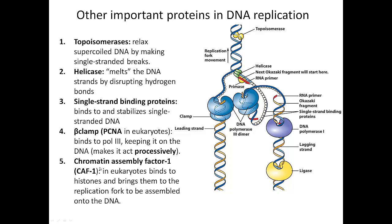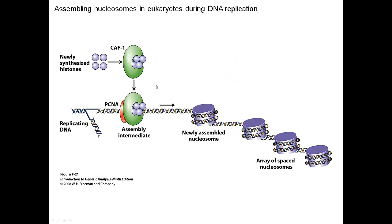Finally, chromatin assembly factor, or CAF-1, is very important during replication but only in eukaryotes. It is involved in putting the nucleosomes onto the new DNA. Only eukaryotes have nucleosomes — prokaryotes do not. The nucleosomes come off the part of DNA being unraveled, and so these old nucleosomes plus some new ones are assembled by CAF-1, which is made up of individual histone proteins. CAF-1 then loads them onto the new strands of DNA.